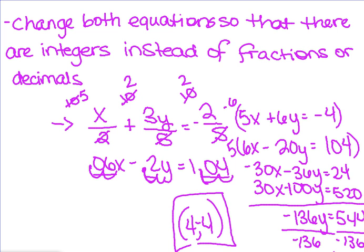Alright, when I solved, I used elimination. I eliminated the x term by multiplying the top by negative 6 and the bottom by 5. I was able to solve when x is 4 and y is equal to negative 4.